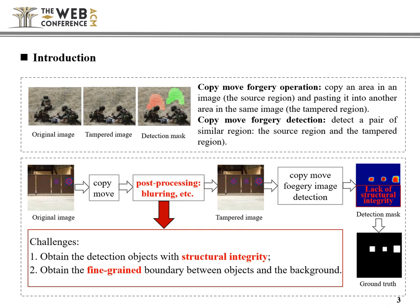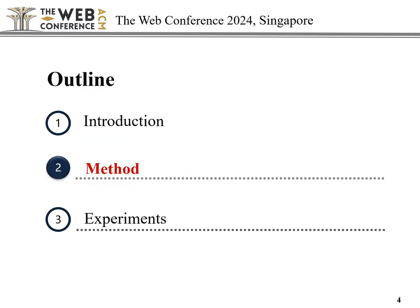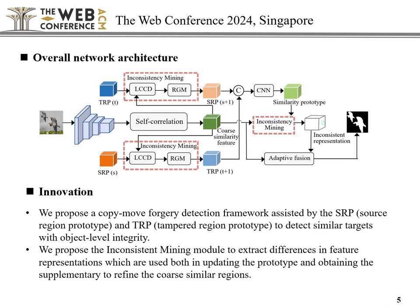Focused on these two challenges, we proposed IAMNet. IAMNet firstly extracts co-similarity features through CNN layers and a self-correlation operation. We customize a source region prototype and a tampered region prototype respectively, calling the former SRP and the latter TRP for short.